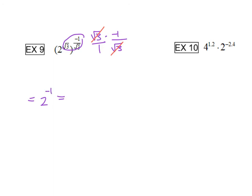When you have your negative exponent, you want to make sure that you make that a positive exponent by bringing that to the bottom, so 1 over 2 to the 1st power, or just 1 over 2.